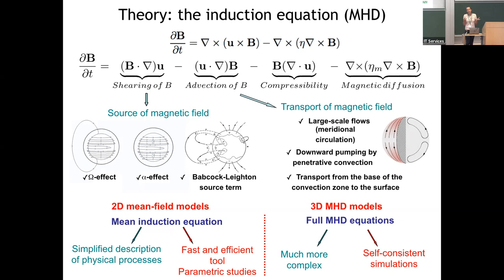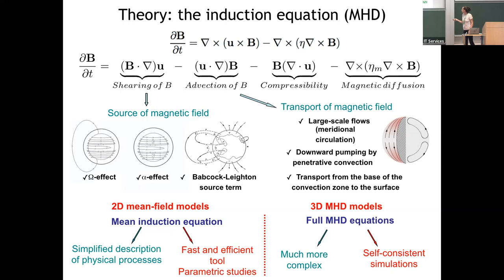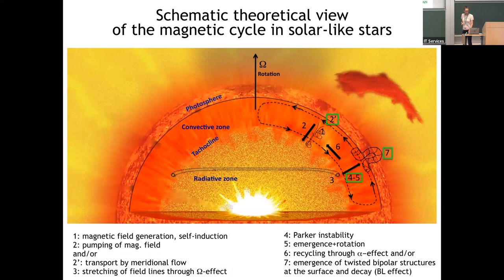We can build different kinds of models: mean-field models where many simplifying assumptions are made and turbulence is parametrized, or full MHD models solving the induction equation coupled with all the other MHD equations — more complex but more self-consistent. Combinations of both approaches are also possible.